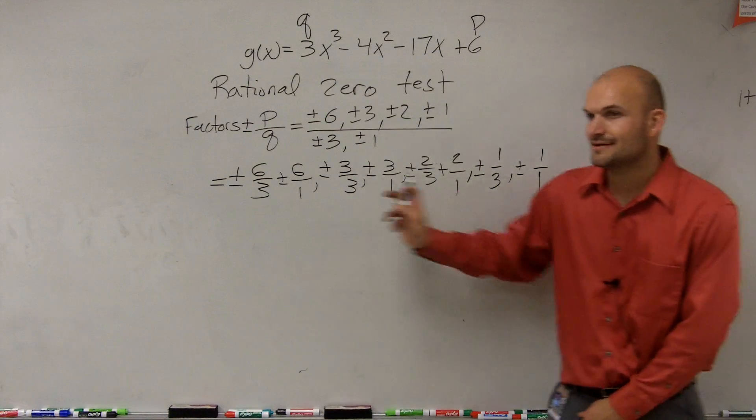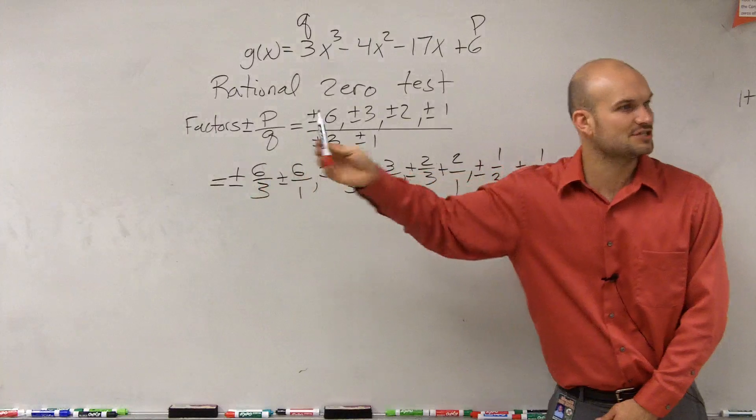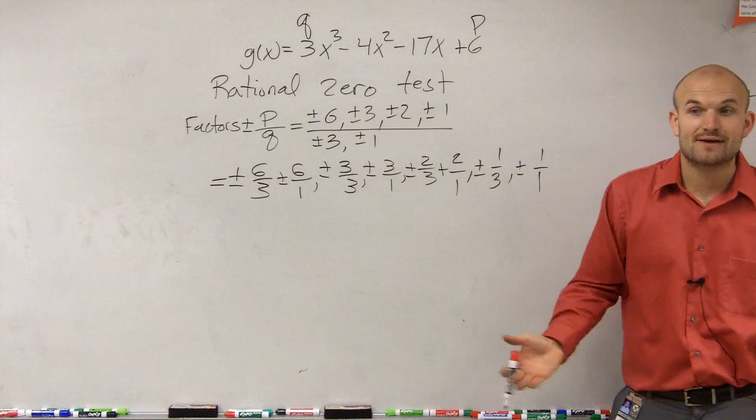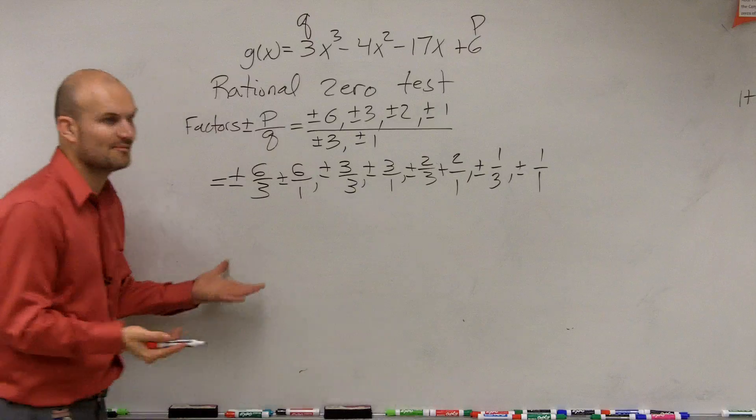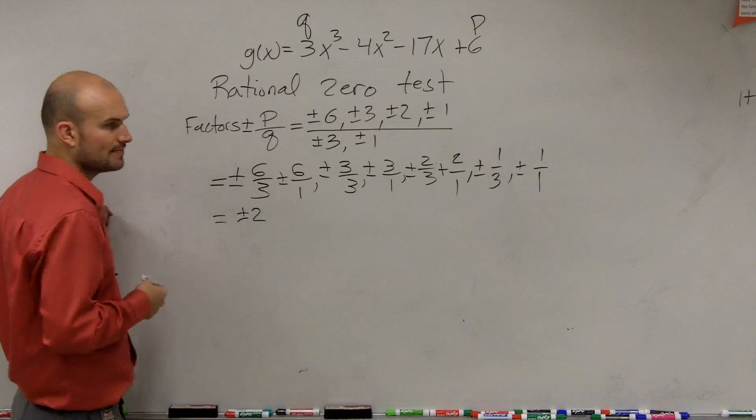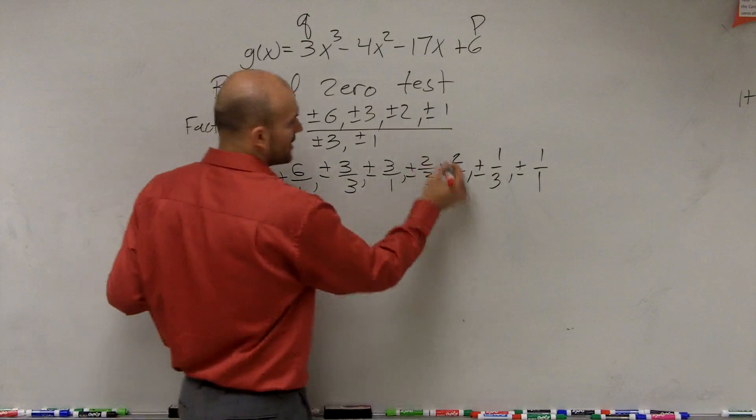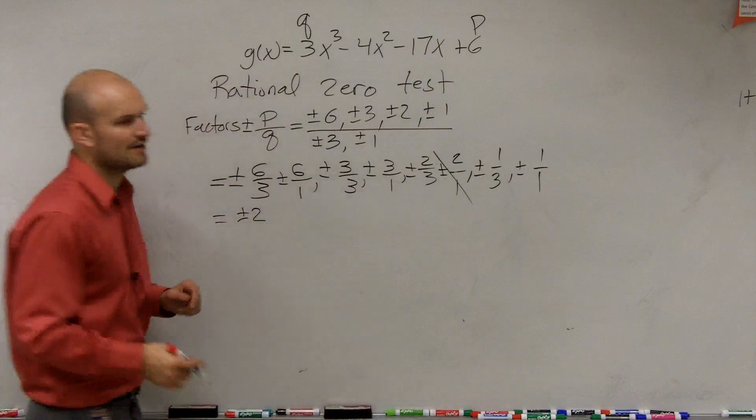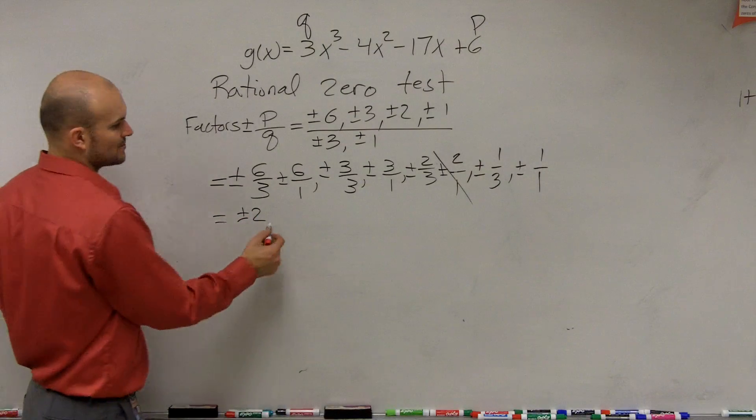So you guys see how now what I did is I took each numerator and I divide it by each denominator. Now we do have some repeated answers. So let's go and eliminate these. And let's simplify them first of all. So 6 divided by 3, we know it's plus or minus 2. Is there any other numbers that represent plus or minus 2? Yeah, it was 2 over 1, right? So we can just kind of eliminate that answer because it's repeated. Let's go to the next one.